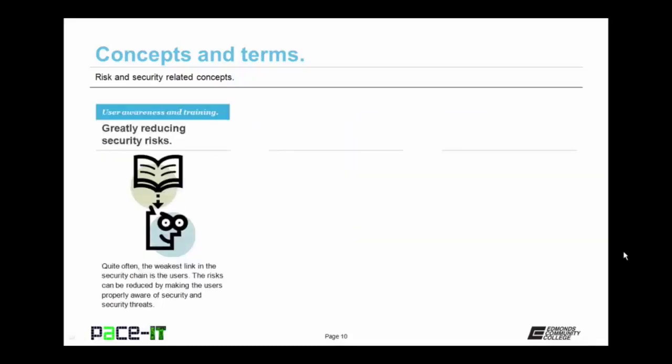User awareness and training can greatly reduce your security risks. Quite often, the weakest link in the security chain is the end user. The risks can be reduced by making users properly aware of security threats through awareness training and security training in general. This training should be conducted on an ongoing basis — it's never a one and done thing.